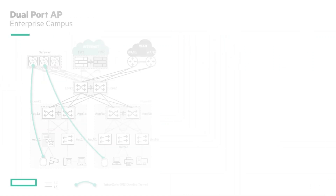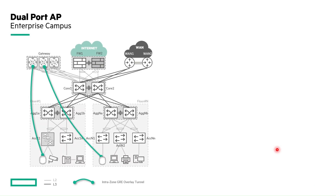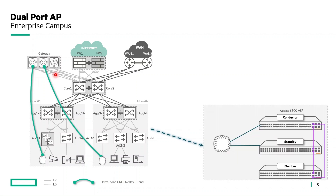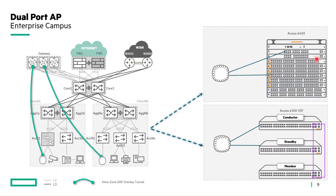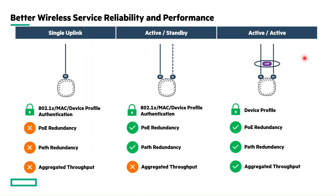The main use case for this feature is the enterprise campus, where dual port APs are connected to the access layer to provide network access to wireless clients. These APs will be tunneled to the gateway. They can be deployed in two ways: in a 6300 VSF stack, one port connects to the conductor and the other to the standby or member for path and PoE redundancy; or in chassis-based 6400 switches, where they connect to different line cards also providing path and PoE redundancy.